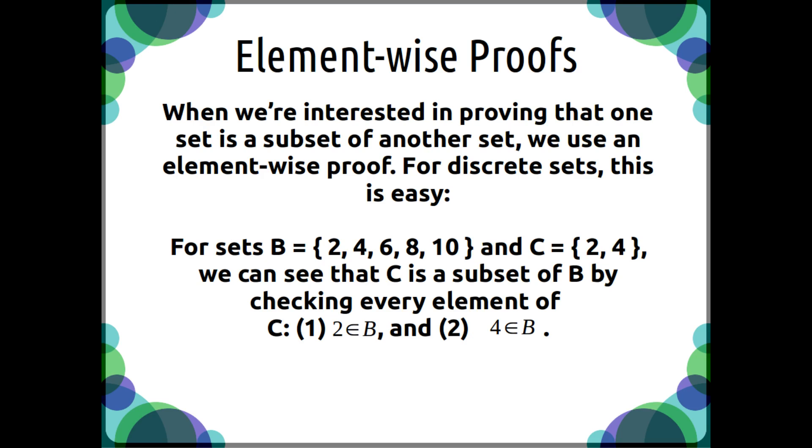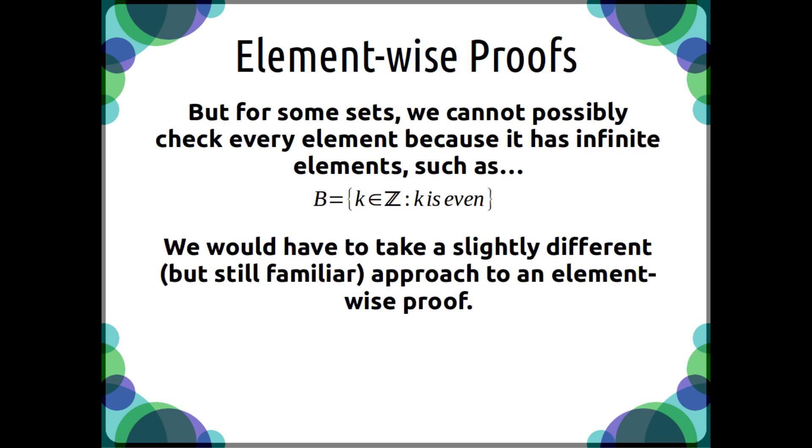2 is an element of B, and 4 is an element of B. But when we have a set that has infinite elements, such as the set of all even numbers, we would have to take a slightly different but still familiar approach to an element-wise proof.